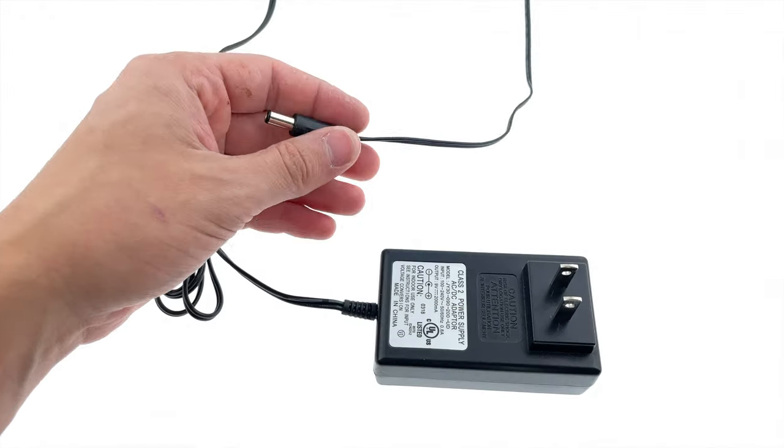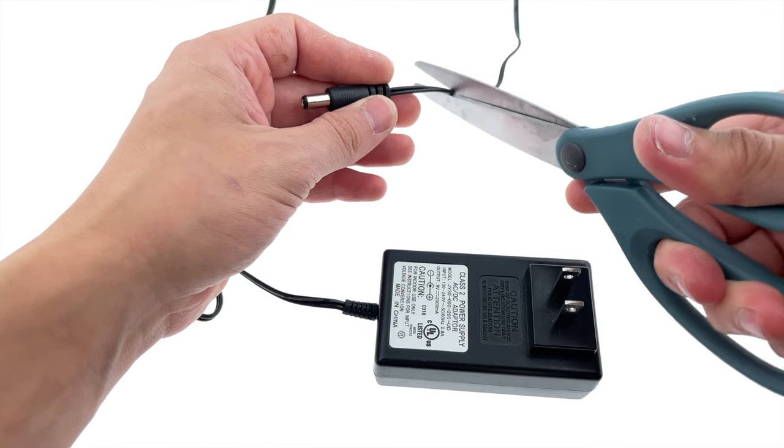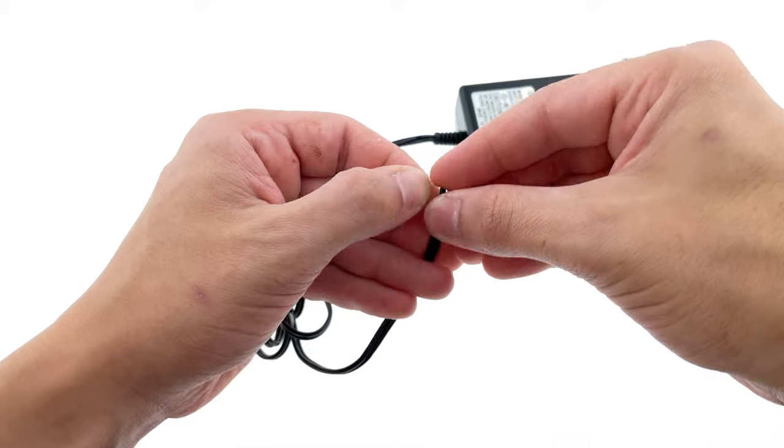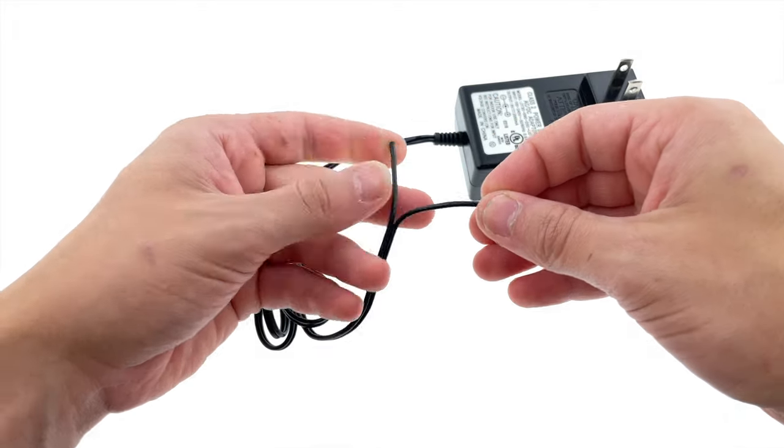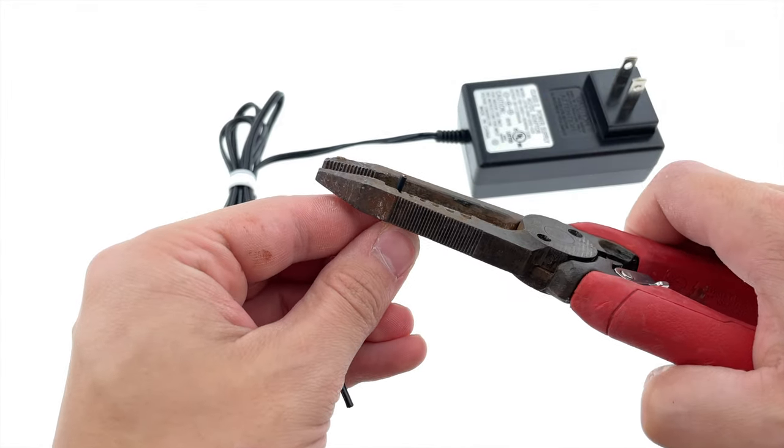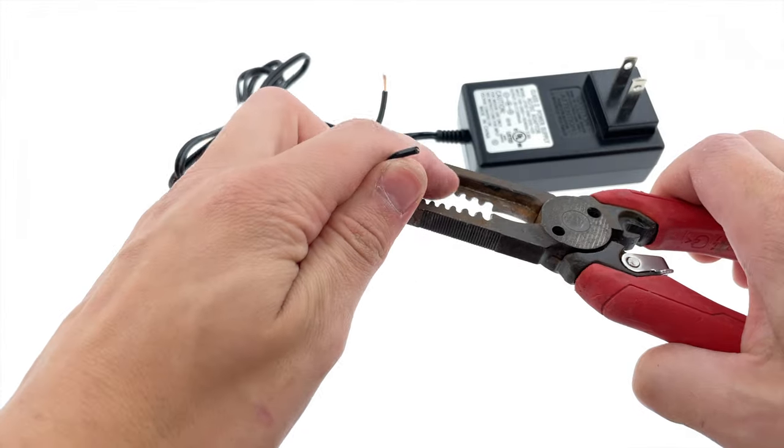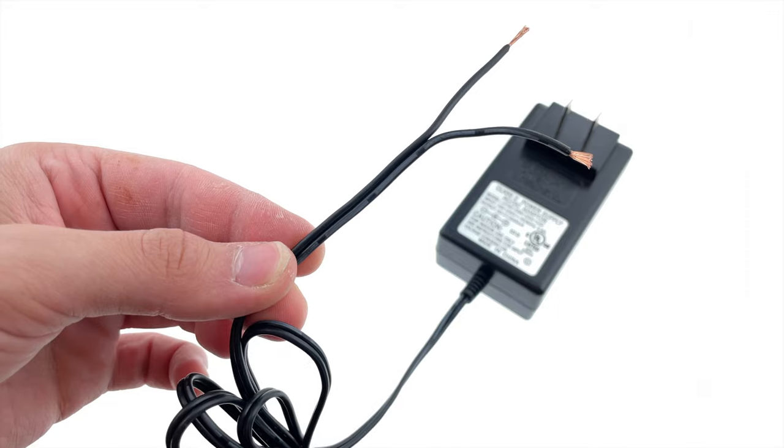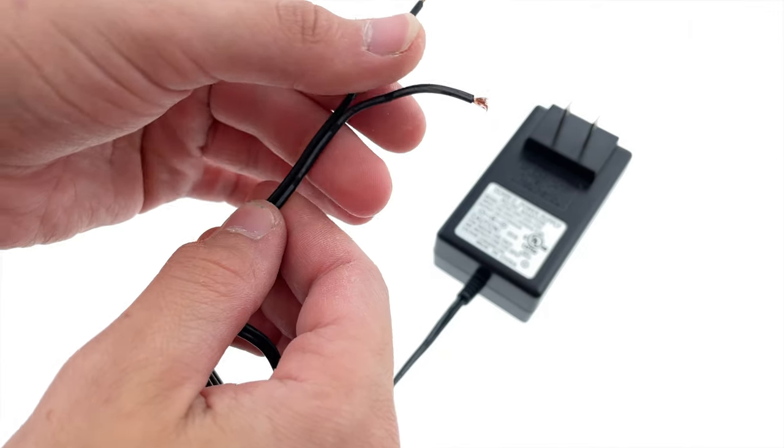So once you have your 9 volt 2 plus amp switching power supply, go ahead and cut the end of it off. I suppose I lied to you in the title, because technically you are modifying this power supply. Next, separate the wires and strip both of their ends. I'm using wire strippers to do this, but really you can use a knife or a pair of scissors. All you gotta do is just get the copper wire exposed.